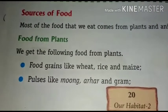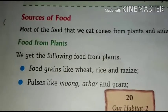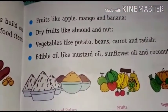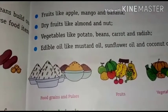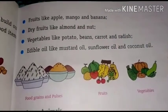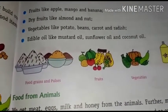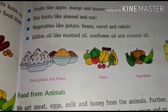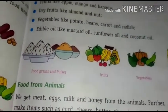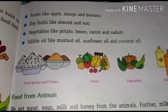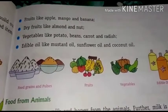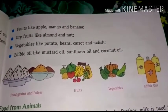We get pulses like moong, arhar, and gram — pulses means daal, so moong daal, arhar daal. Next we have fruits like apple, mango, and banana. We also have dry fruits like almond and nut. Vegetables like potato, beans, carrot, and radish. And edible oils like mustard oil, sunflower oil, and coconut oil — the oils which we use for cooking our daily food.